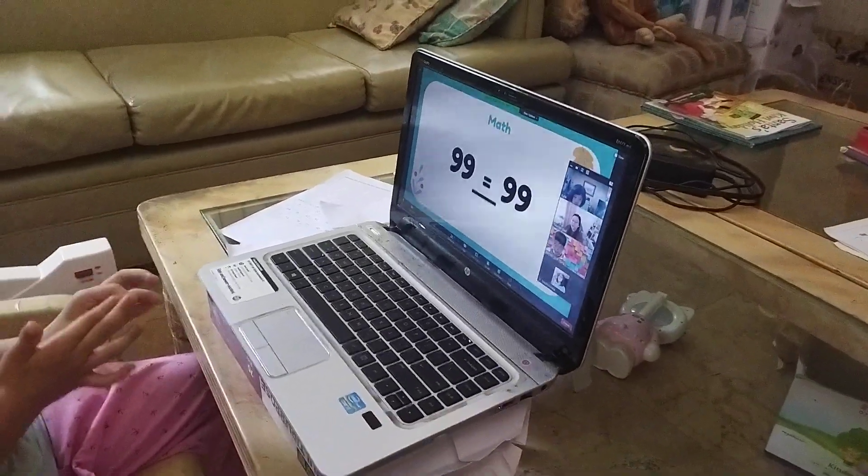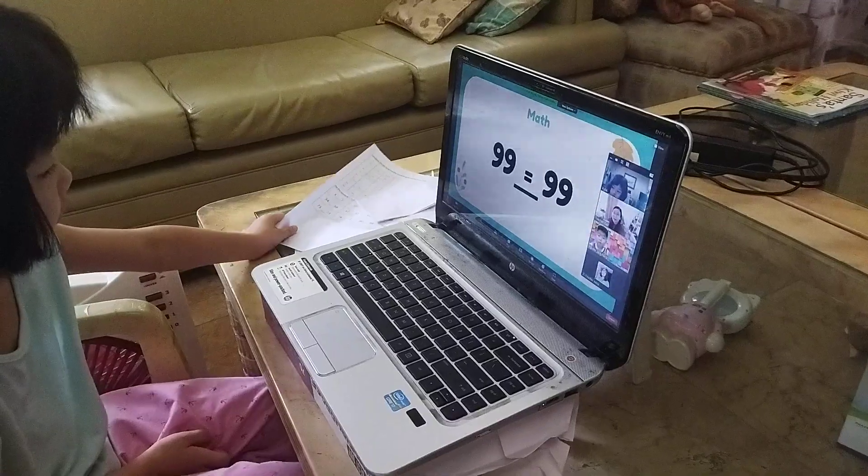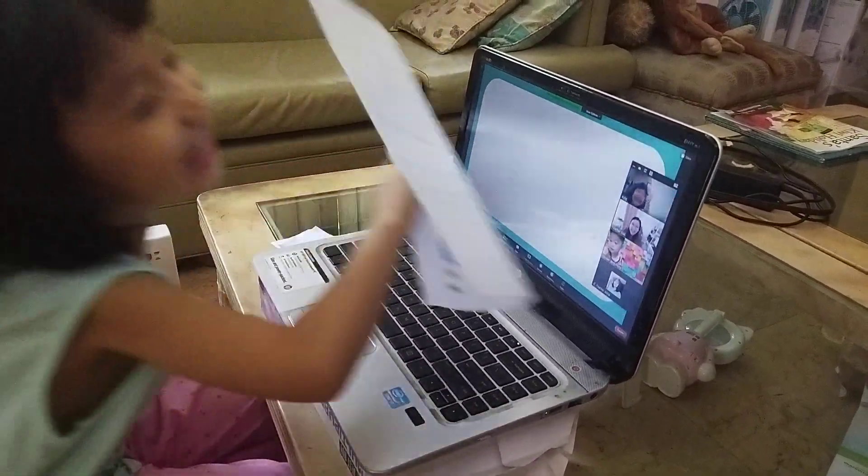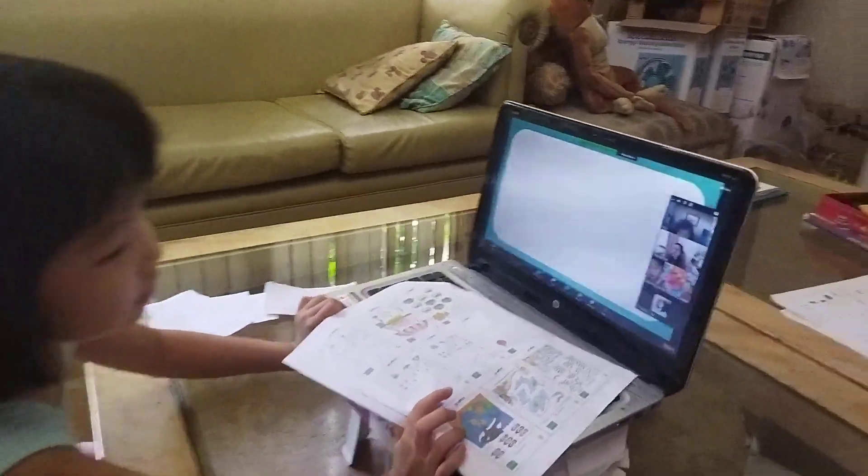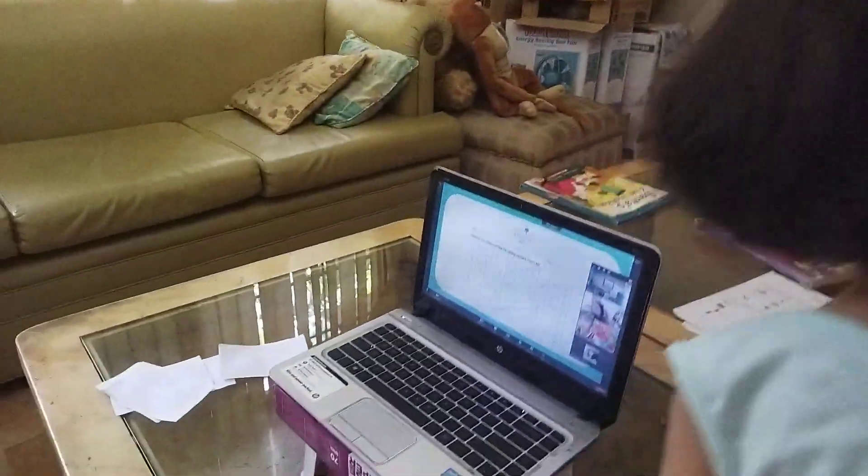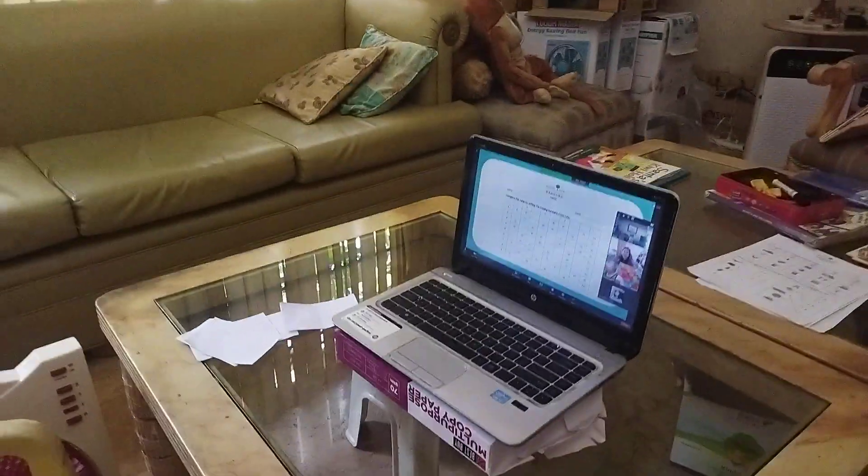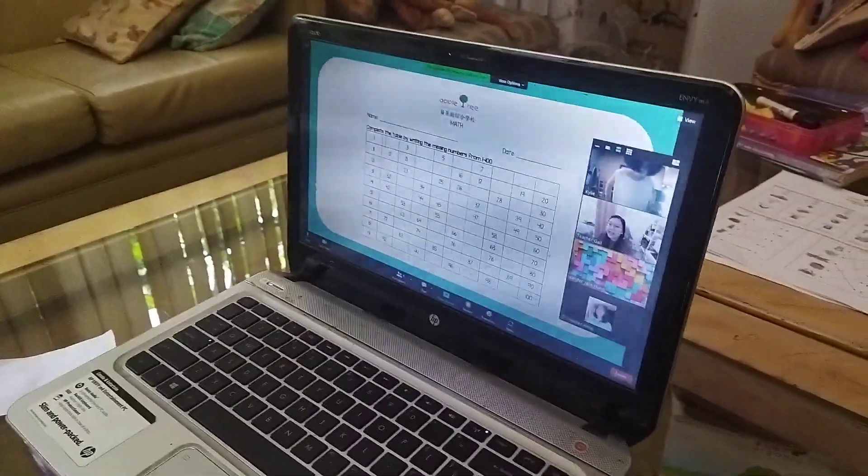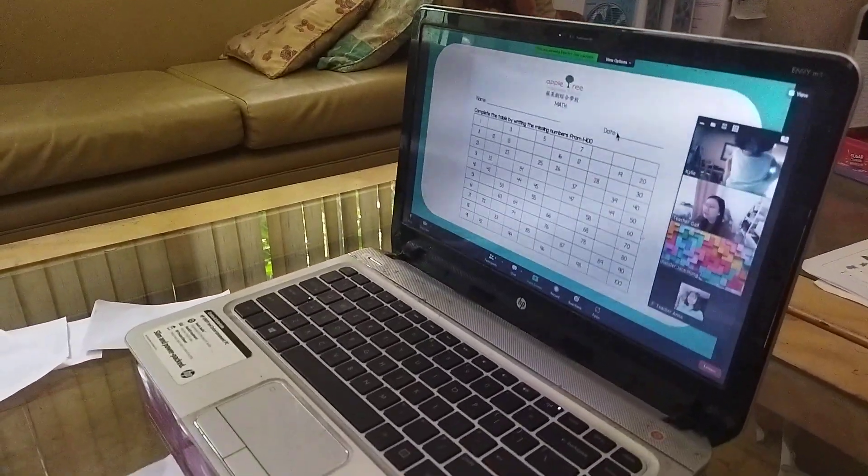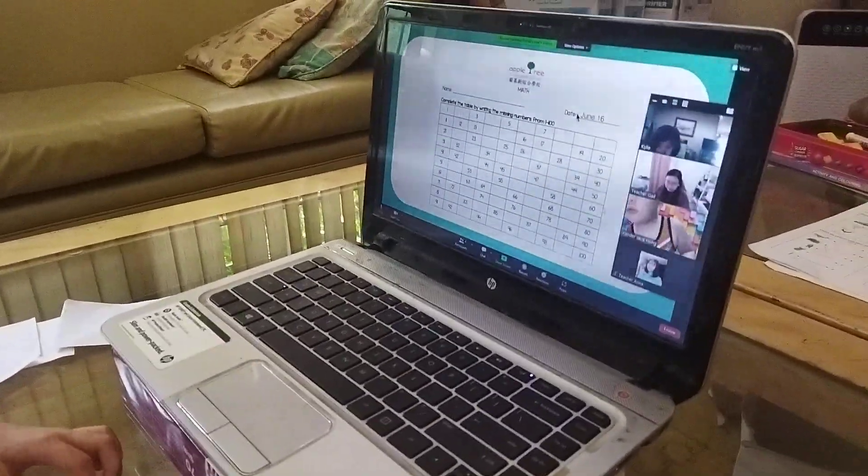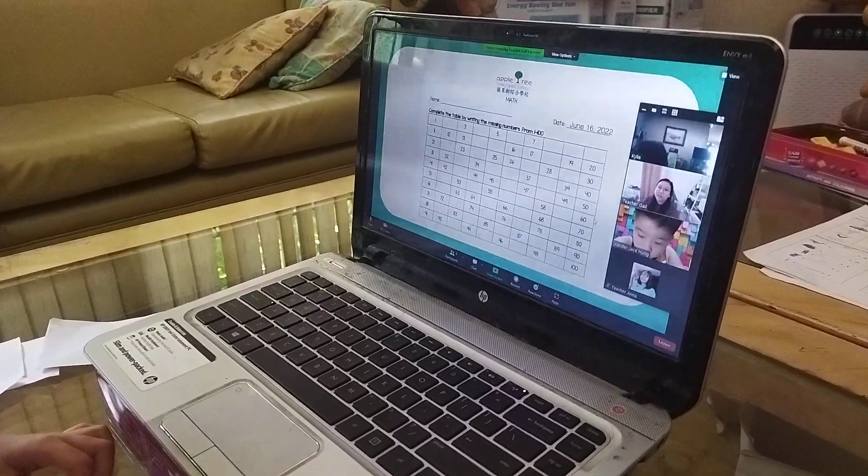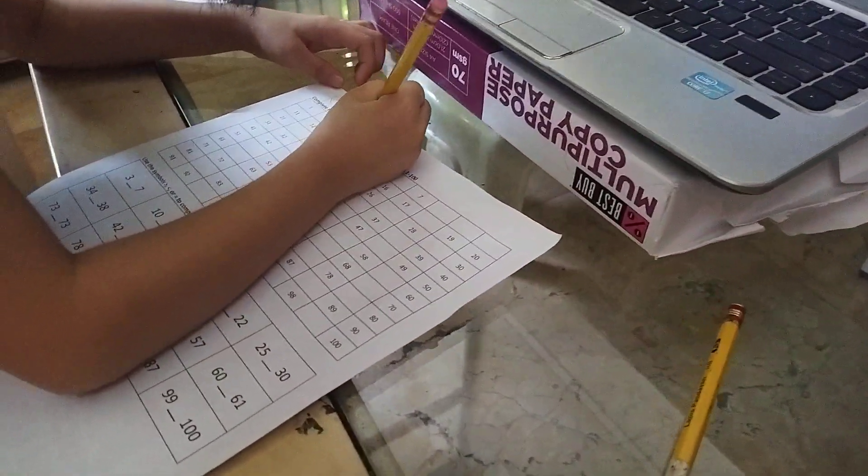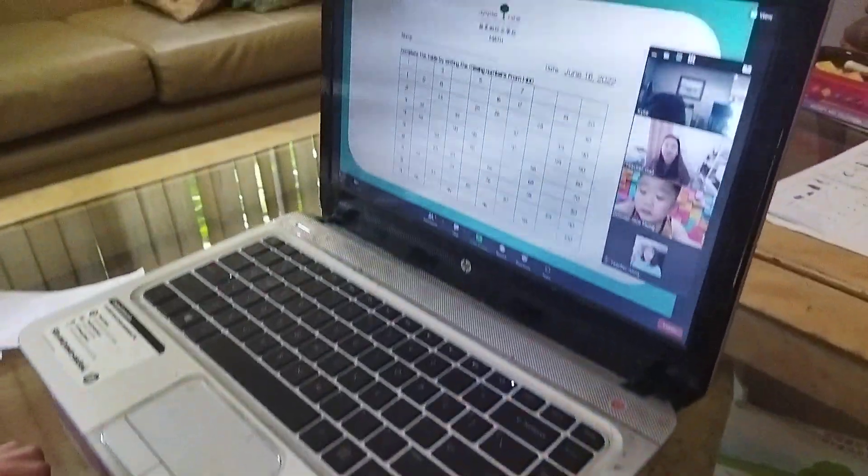All right. So since Kylie and Sander knows their numbers well, and they know how to compare correctly, let's get our worksheets. We have your worksheets already. Are you ready? Good job. Thank you, darling. Okay. So we take a look at the first part. For the first part, we have to put our name. Did you put your name already? Write your name. And then the date for today. Today is June 16, 2022. Okay, I'll give you time to write.